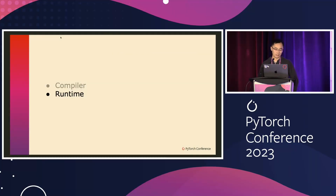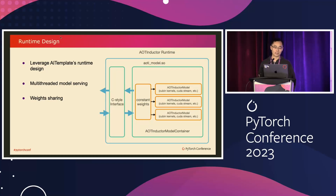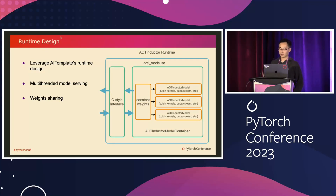Simply giving you a .so file may not be sufficient for actual deployment. We also took ideas from AITemplate's runtime design and designed a runtime for AOT Inductor which does things like multi-threaded model serving. It has a thread pool that can run multiple instances of the AOT-compiled model. Those model instances can share all the weights, because for inference all weights are constant — there's no point duplicating them. In the GPU case, we also leverage CUDA streams to increase concurrency, so different instances of your model can each run on different CUDA streams.